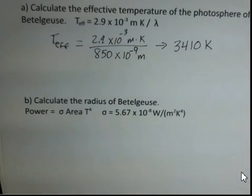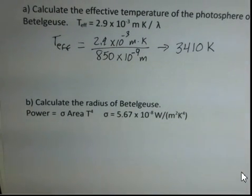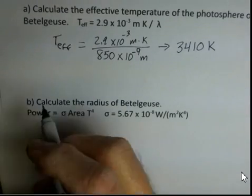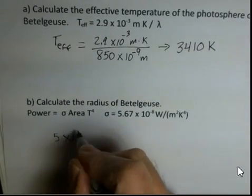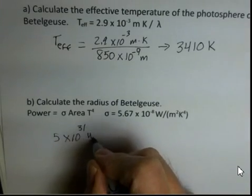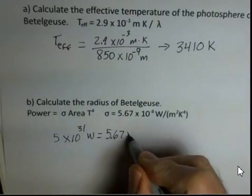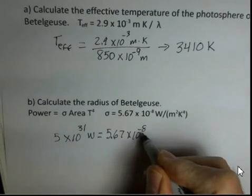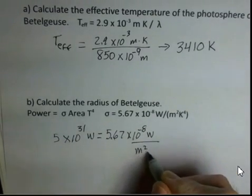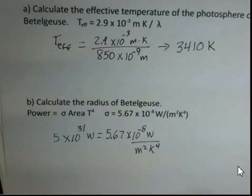So now the radius of Betelgeuse. So we have the power from above, 5 times 10 to the 31st watts. Our Stefan's constant, 5.67 times 10 to the minus 8 watts per meter squared and kelvin to the fourth power.